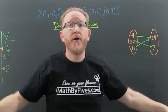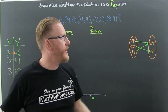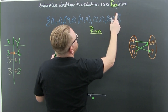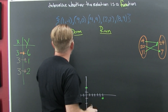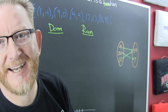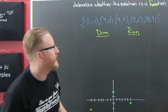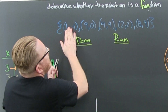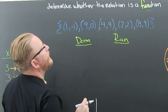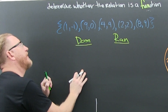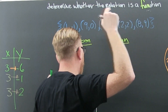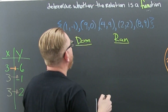I'm just trying to function! We're talking about relations and whether or not they're functions. I have this collection of points — that's the relation. I want to know whether or not that's going to be a function. If each first element corresponds to exactly one second element, then it is a function.